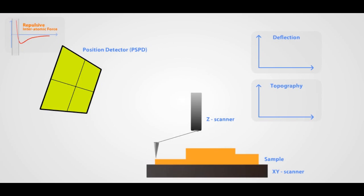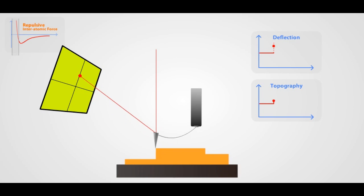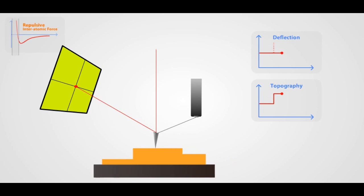In contact AFM, the cantilever scans across a sample with its tip touching the sample surface. Because the tip is in contact with the surface, strong repulsive forces cause the cantilever to bend as it passes over the surface features.